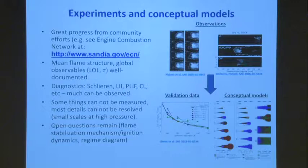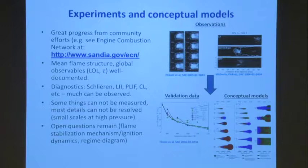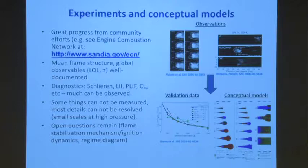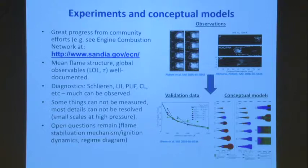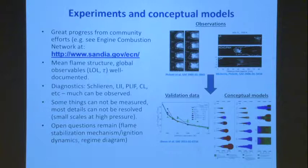Some of these images in the upper right show the sequence of auto-ignition and flame stabilization events inside a high-pressure combustion vessel representing engine conditions. However, even with these diagnostics, there are still many things that can't be measured, and a lot of details that can't be resolved, especially at high pressure where scales get much smaller for both turbulence and the ignition fronts and flames. A lot of information is either unavailable or not well resolved through lower-dimensional or line-of-sight measurements. There remain open questions regarding how flames are stabilized, liftoff lengths, and multistage ignition mechanisms.